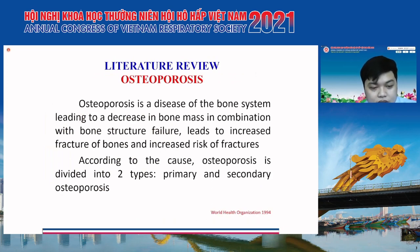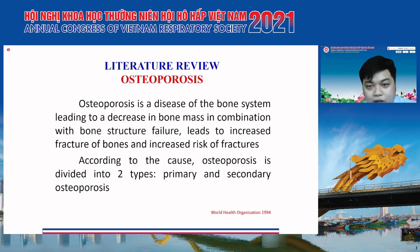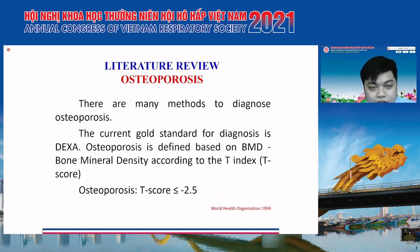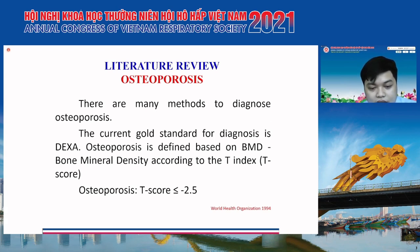Osteoporosis is a disease of the bone system leading to a decrease in bone mass. According to classification, osteoporosis is divided into two types: primary and secondary osteoporosis. There are many methods to diagnose osteoporosis. The current gold standard for diagnosis is DXA. Osteoporosis is defined when the T-score is less than or equal to minus 2.5.